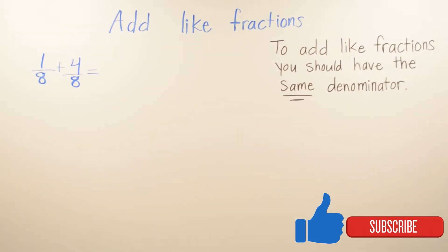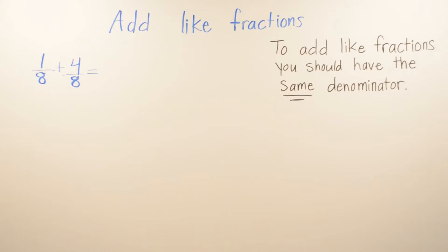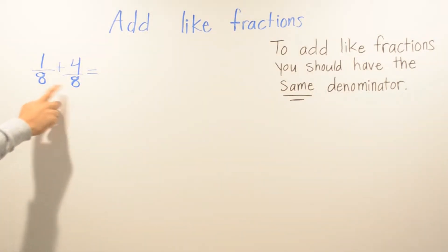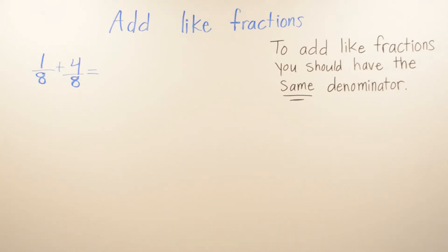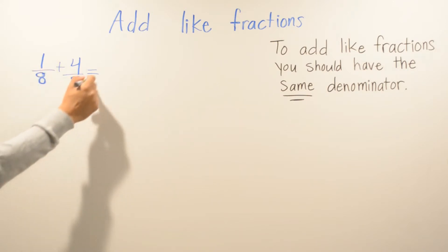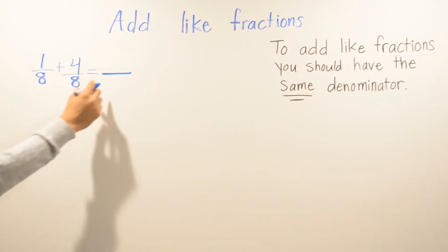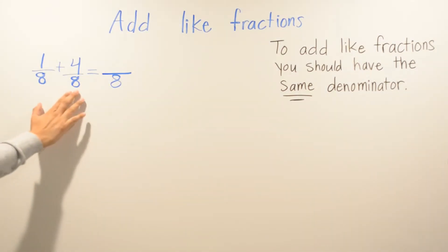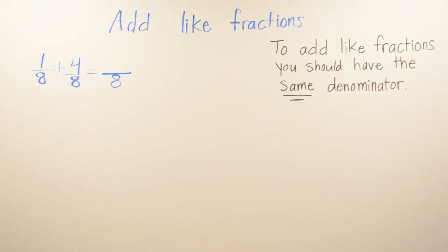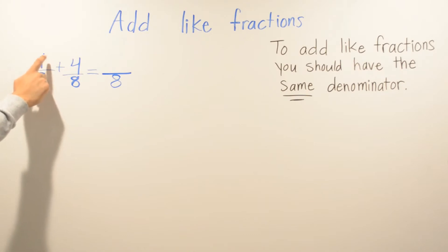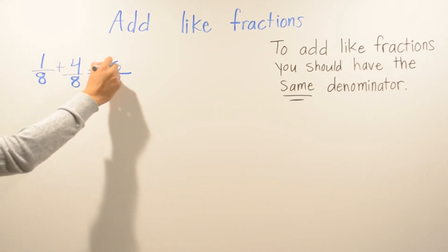In today's video we're going to be working on adding like fractions. To add like fractions you should have the same denominator. Here our denominator is 8. If I have different denominators we won't be able to add until we find the same denominator. When you add like fractions your denominator is never going to change — it stays whatever number it is. In this case it's 8, so we just keep 8, and the only thing that changes is the numerator: 1 plus 4 is 5.